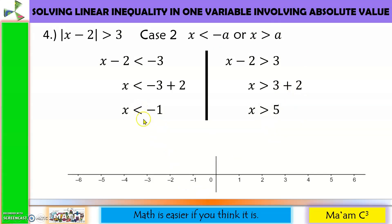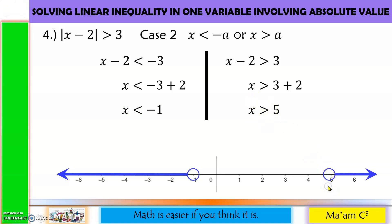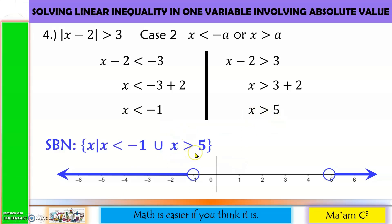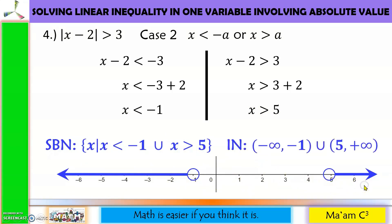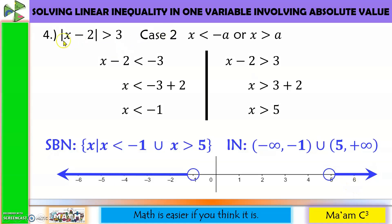Graph: on negative 1, empty circle pointing left; on 5, empty circle pointing right. Interval notation: negative infinity to negative 1 excluded, union 5 excluded to positive infinity. Quick check with negative 2: the absolute value of negative 2 minus 2 is 4, and 4 is greater than 3 — correct. Check with 6: the absolute value of 6 minus 2 is 4, and 4 is greater than 3 — also correct.